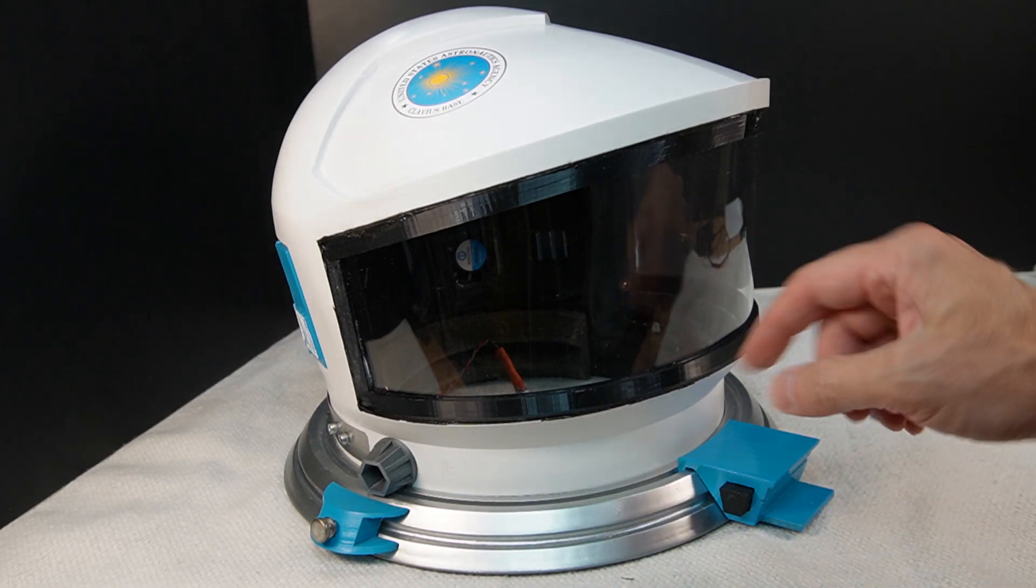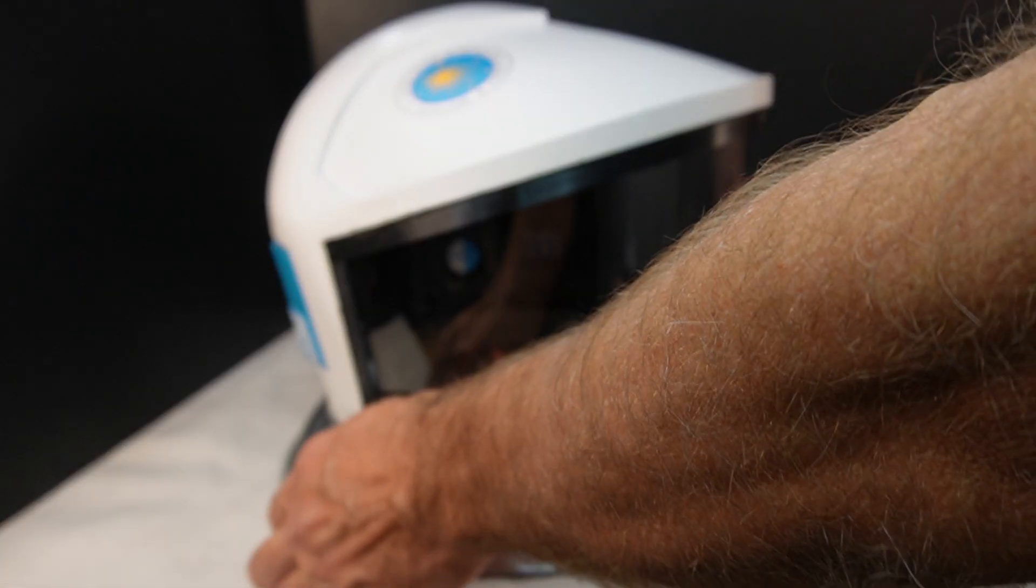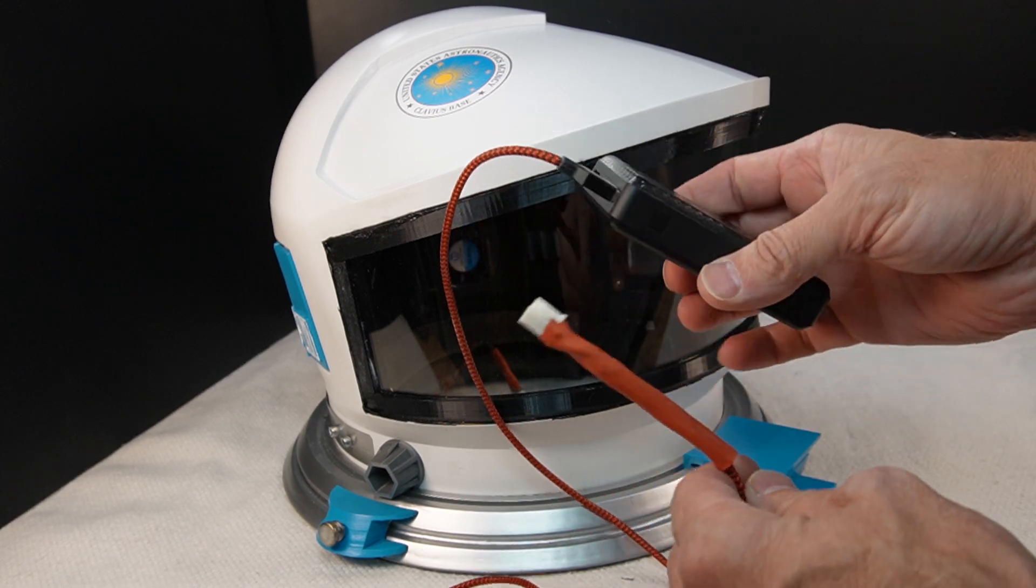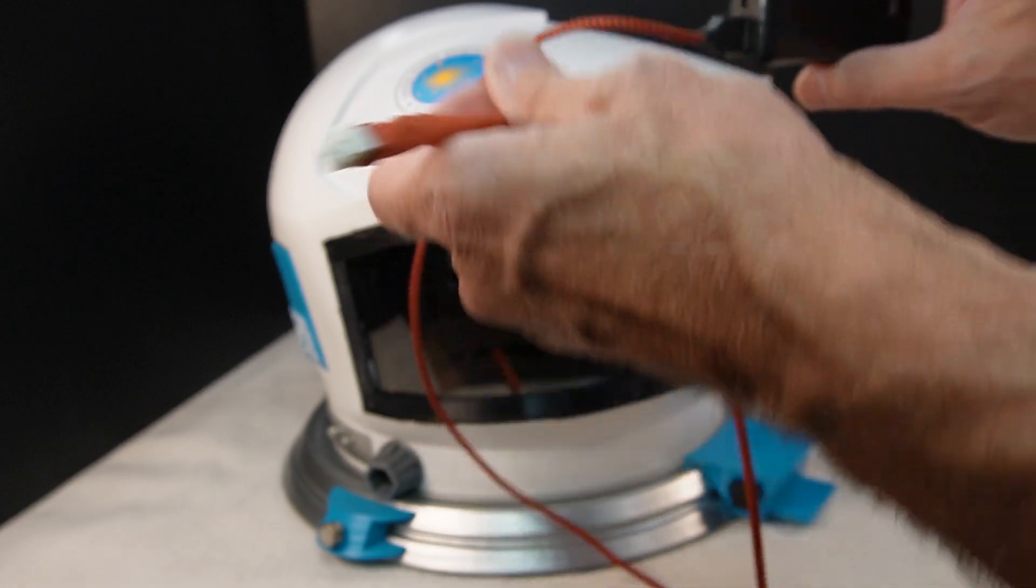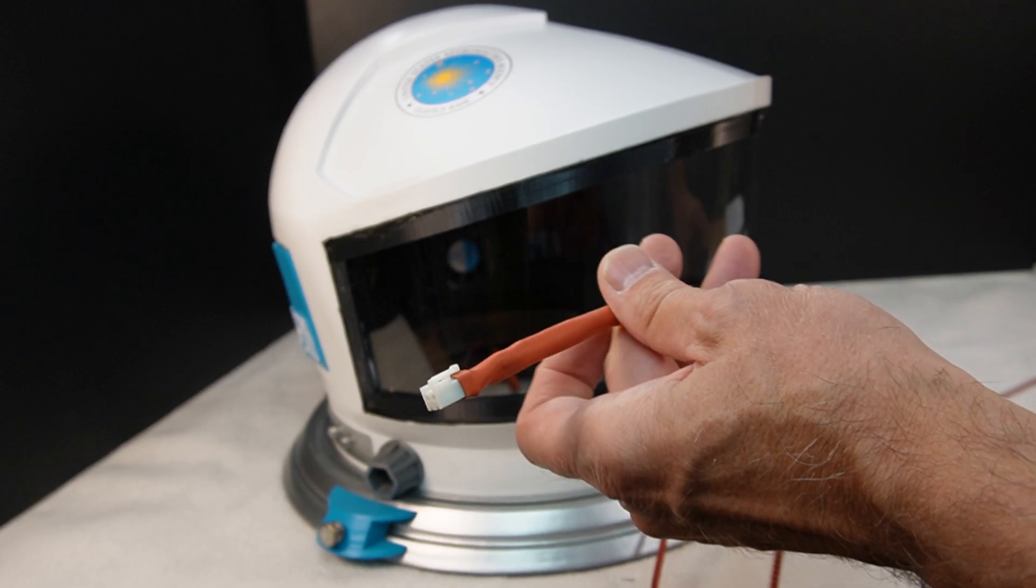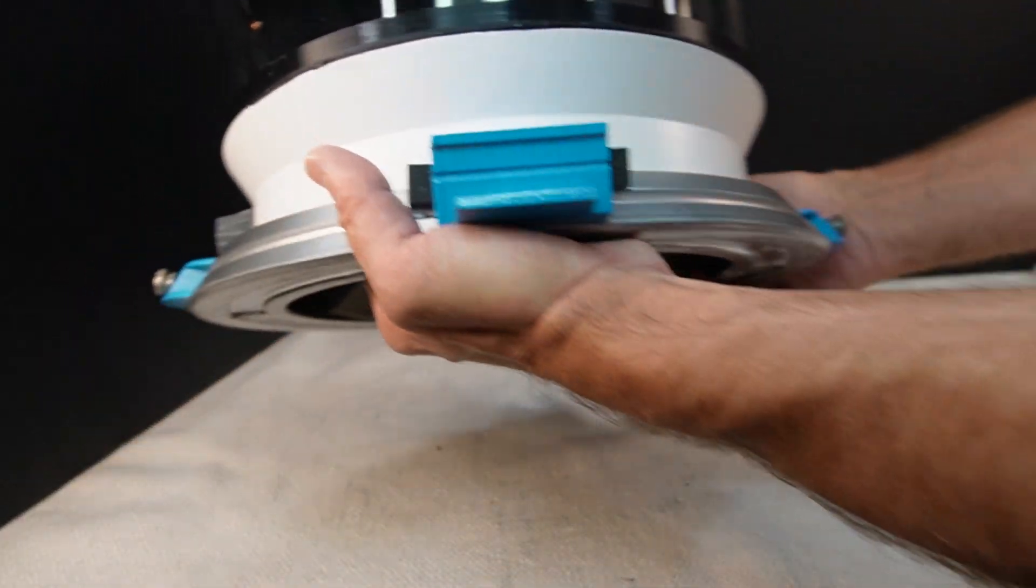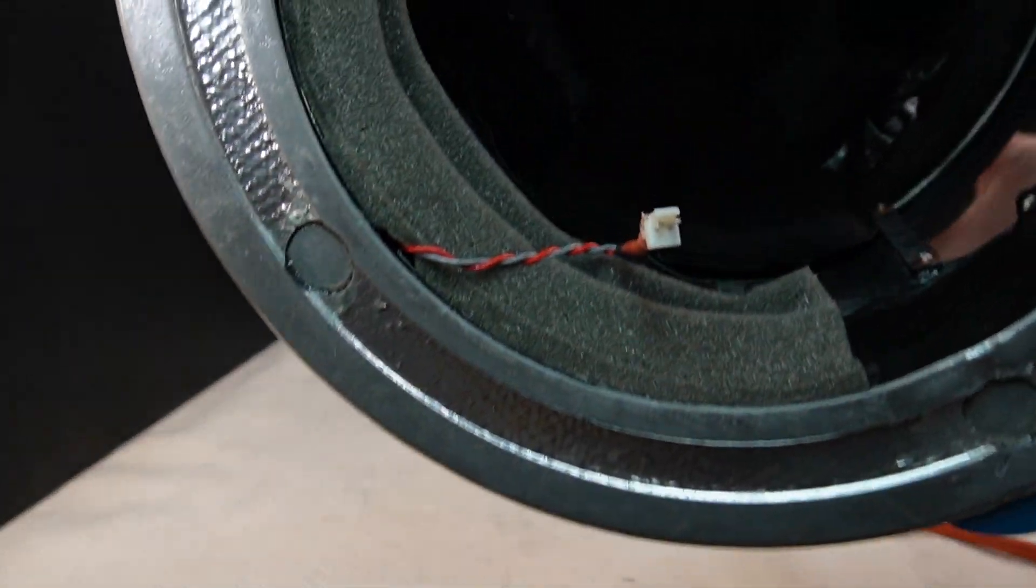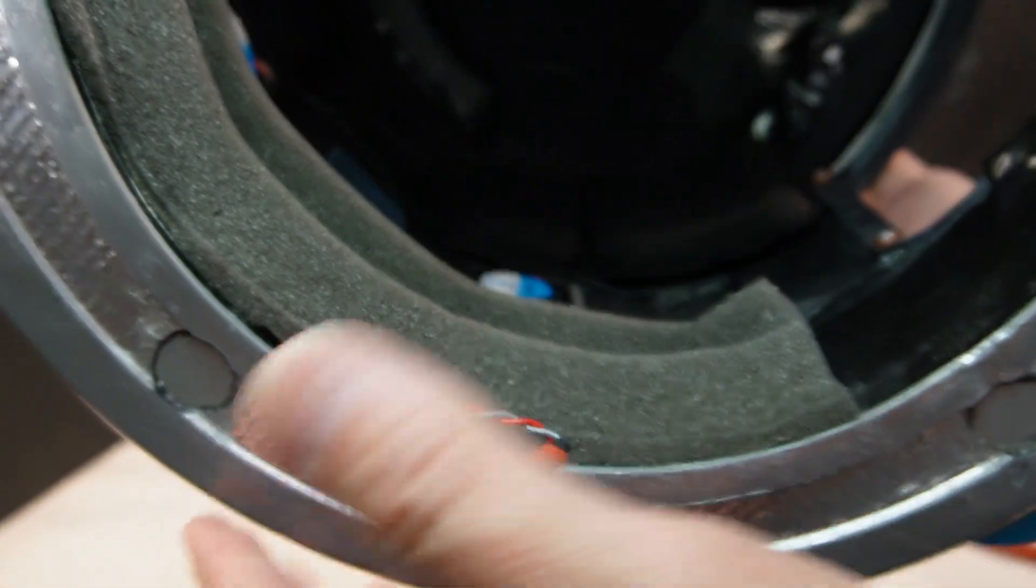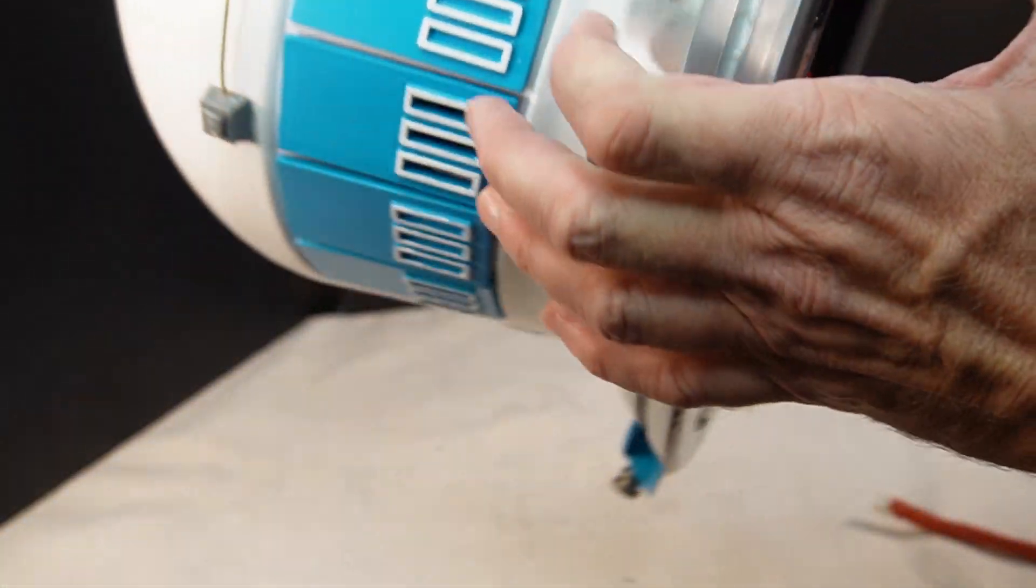Inside the helmet is powered by this five volt USB phone battery pack. I just took a cable and put a connector on the end so that it could connect to the helmet. This powers up two fans and the LED lights that light up my face in the helmet.